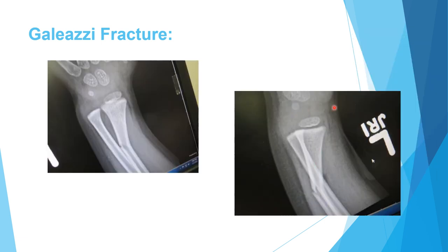Here is another x-ray of a Galeazzi patient, a little younger. On the AP you can see mild deformity, and on the lateral it's obvious that the distal radio-ulnar joint is displaced — the distal radius and distal ulna are not overlying each other. As said, the vast majority show volar angulation, which is apex dorsal angulation, and the distal part is in the volar direction.